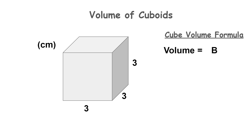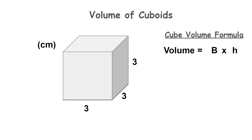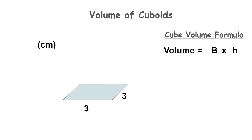To calculate the volume of a cube we use the formula capital B multiplied by H. Capital B stands for the area of the base of the three-dimensional shape. The base is the two-dimensional shape at the bottom of the figure, and since the three-dimensional shape is a cube, the base shape would be a square.